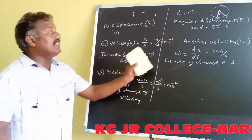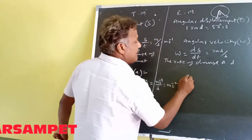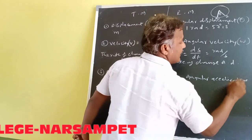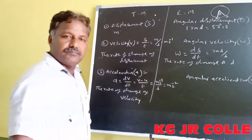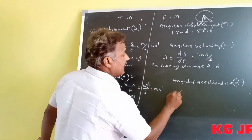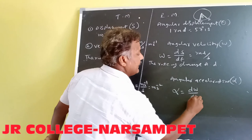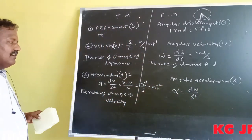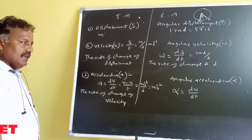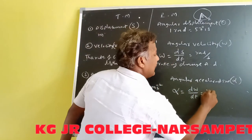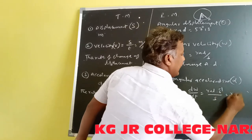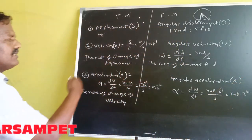The next physical quantity is angular acceleration, denoted by alpha. Angular acceleration formula: alpha equals d omega divided by dt. The definition: the rate of change of angular velocity is called angular acceleration. Units of angular acceleration: angular velocity unit is radian second minus one, divided by second, giving radian second minus two.